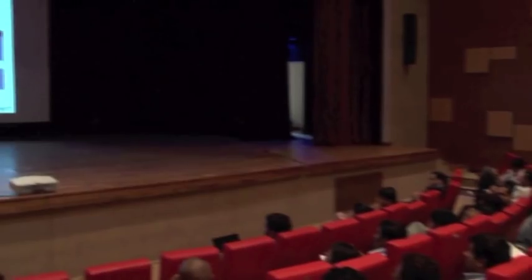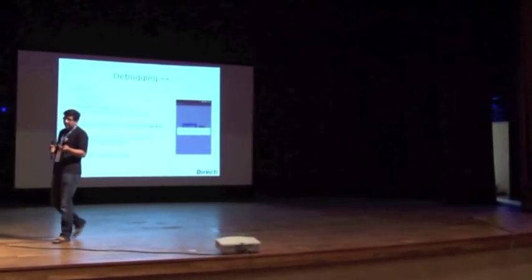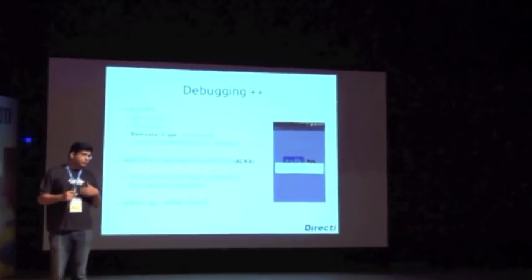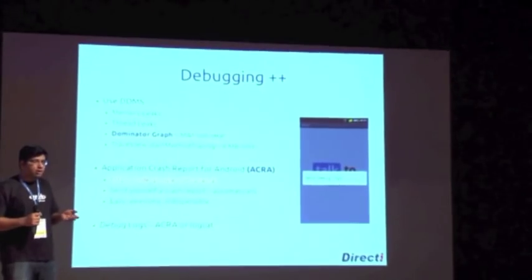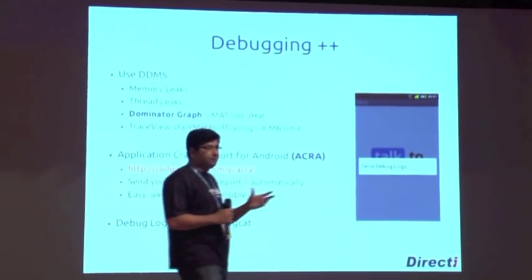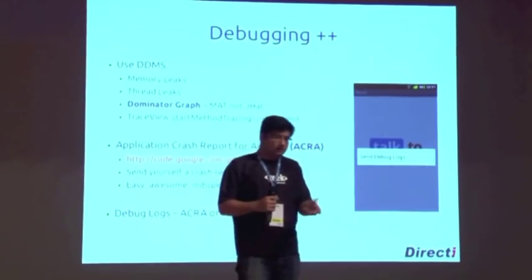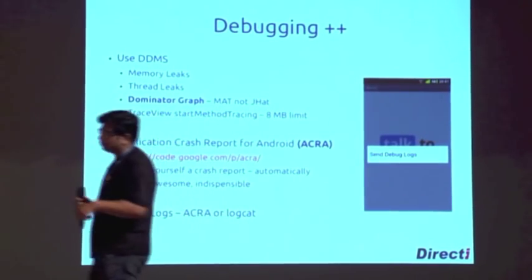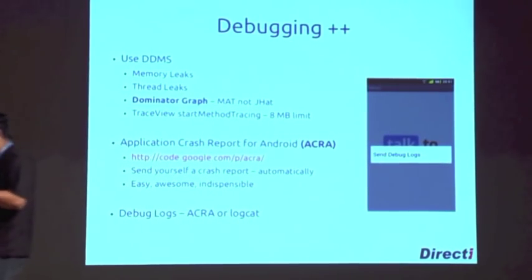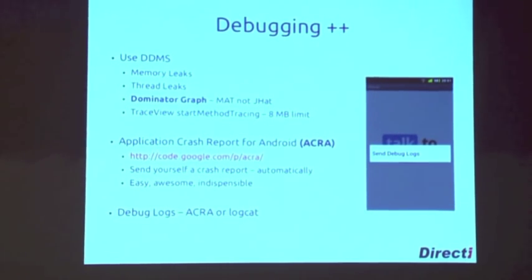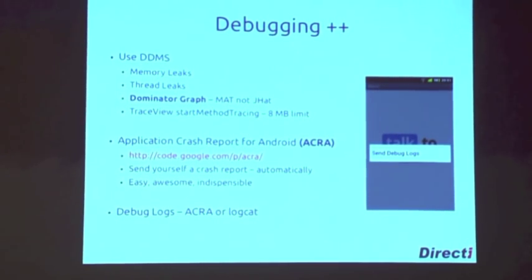You will also find thread leaks — threads which are just not dying because you are waiting on some lock that you haven't released, and you don't realize it because that part of the application isn't what you are working on or testing. So if you use DDMS often to debug, you will find those threads and your app will become a lot snappier.